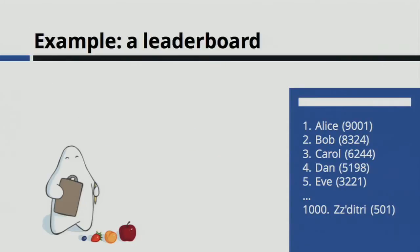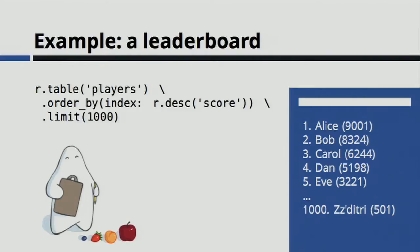The example I'm going to give is super simple — just a leaderboard. You have some sort of game and you want to show a list of the top 1,000 players and their scores. If you wanted to write a normal non-real-time version of this, it would be incredibly easy — just a three-line query. Take the table players, order by the score in descending order, take the first 1,000 elements, display that on the page, and you're done. Close the connection. Task complete.